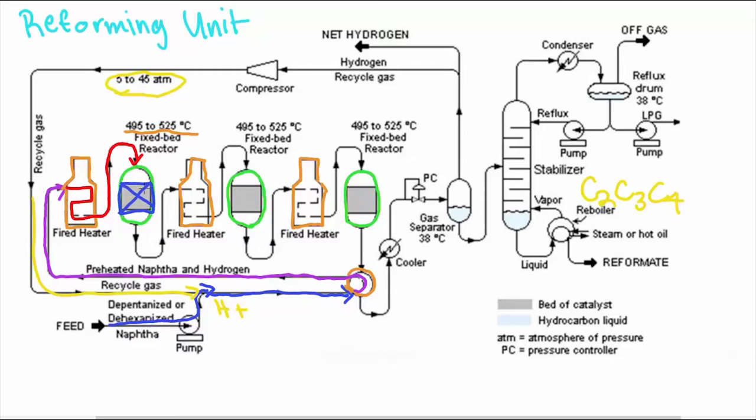To maintain the required reaction temperature and rate of reaction, the vapor is reheated in the second furnace before it flows through the second reactor.